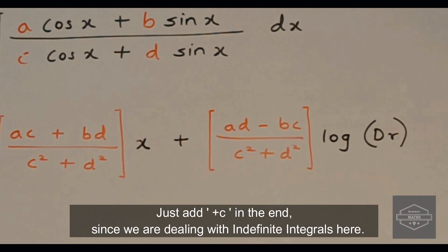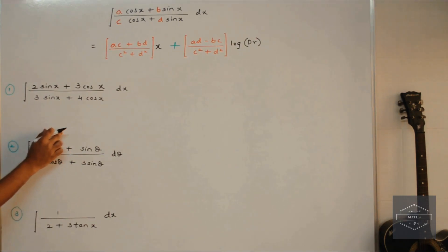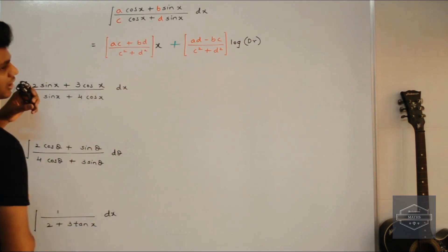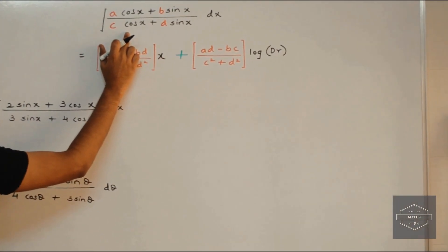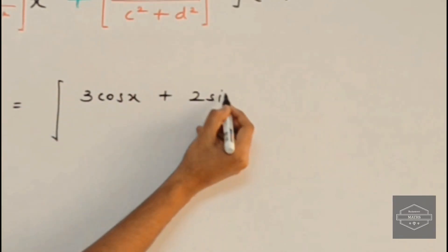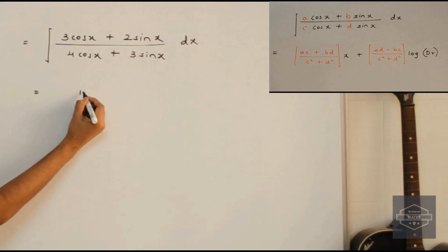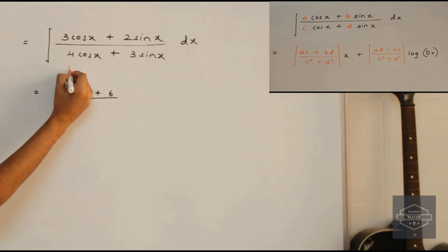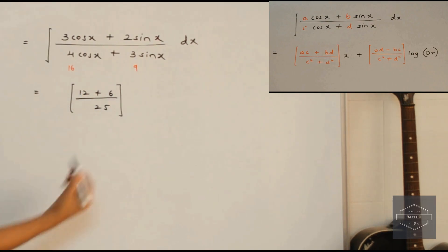Now let's quickly solve some questions based on this type using the shortcut. In question number one, before we apply the shortcut we observe that the structure is not exactly the same as our standard formula — here the sin term is written first and then the cos term. In our standard formula the cos term comes first. So let's rearrange these terms. Now applying the shortcut: the first term will be 3 into 4, which is 12, plus 2 into 3, which is 6, upon 4 squared plus 3 squared — that is 16 plus 9 equals 25. This is our first term, multiplied by x.